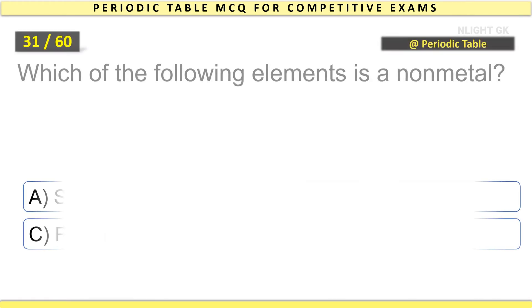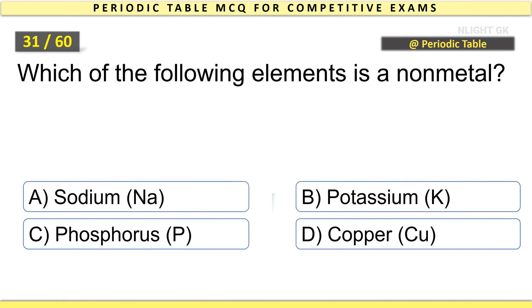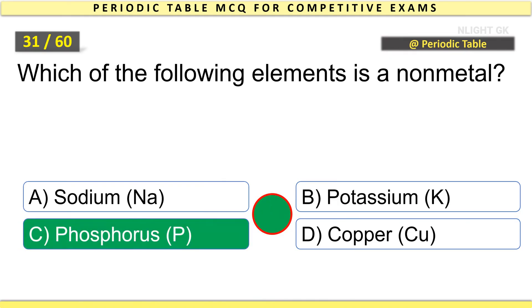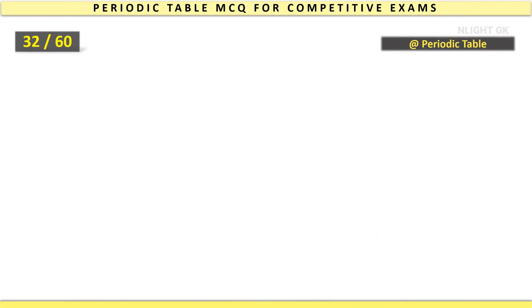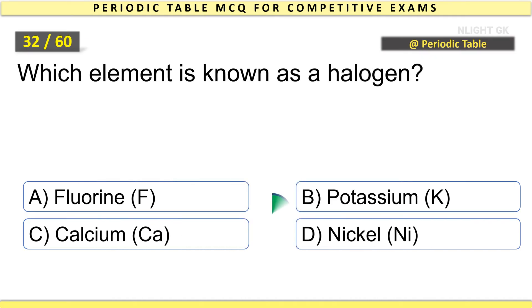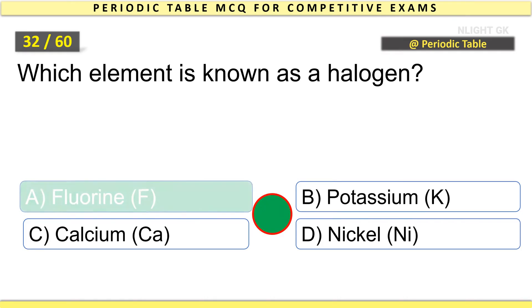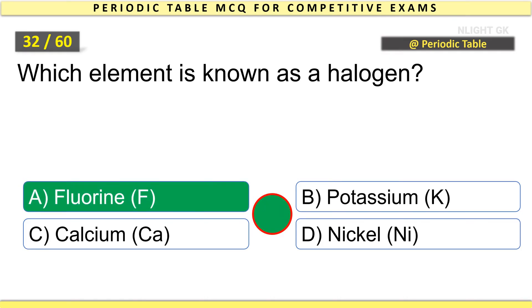Which of the following elements is a non-metal? Phosphorus. Which element is known as a halogen? Fluorine.